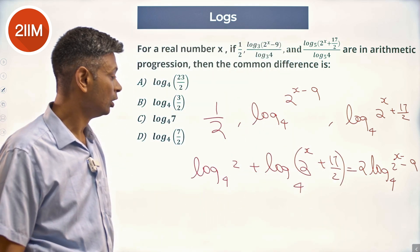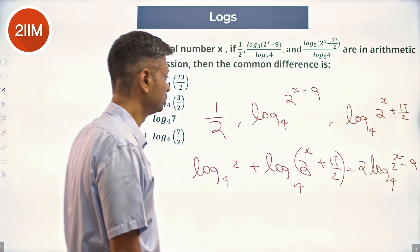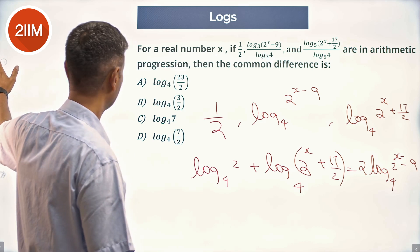Now this becomes a far simpler question, because 2 · (2^x + 17/2) equals (2^x - 9)².